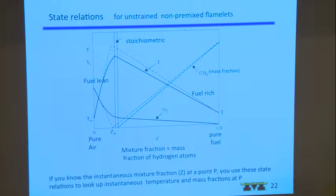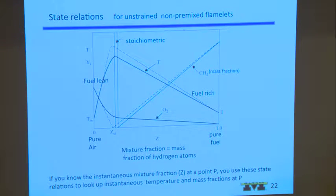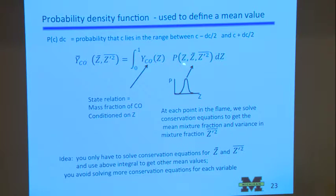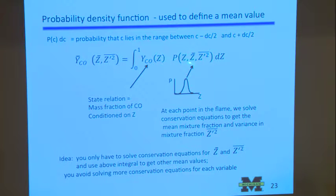Y_CO would be something on the state relation — there wouldn't be much CO on one side, but there would be a lot of CO further over. There'd be some sort of a curve representing Y_CO as a function of Z. We get this from Chemkin — we just assume a laminar strained flame and put that in. Then we need the probability that Z is in the range we're interested in, and we multiply these two to get the mean.